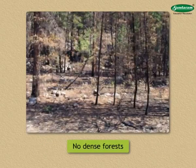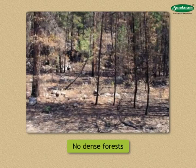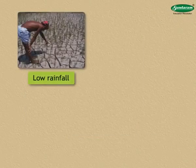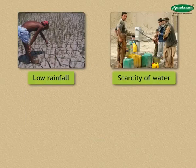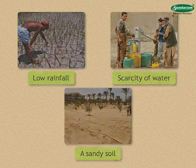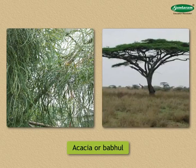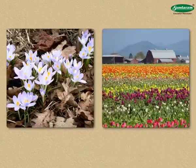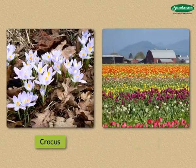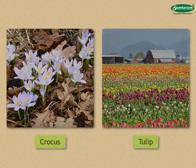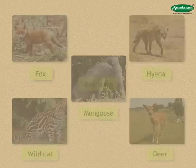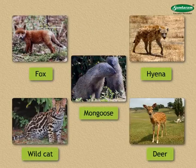There are no dense forests here because of adverse factors like low rainfall, scarcity of water, and sandy soil. Thorny trees like acacia or babool, which are found in desert regions, grow here. Date palms and flowering plants like crocus and tulip are also seen.